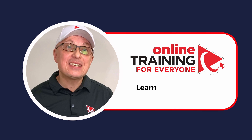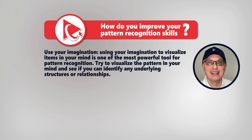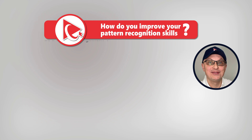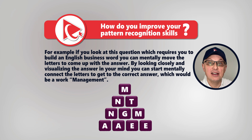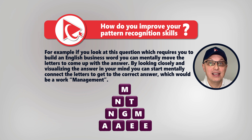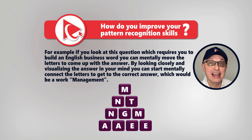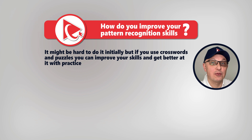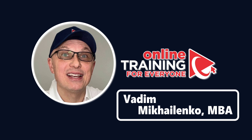One of the key ways to improve pattern recognition skills is to use your imagination — visualizing items in your mind is one of the most powerful techniques. For example, if you're required to build an English business word using all given letters only once, you can mentally connect the letters and get to the correct answer, which is the word 'management.' It might be hard initially, but doing crosswords and puzzles can improve your skills with practice. Do you have any other interesting techniques? Please post in comments.